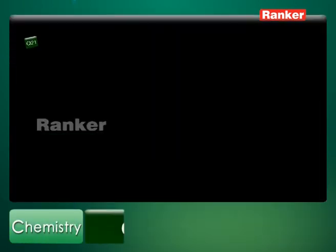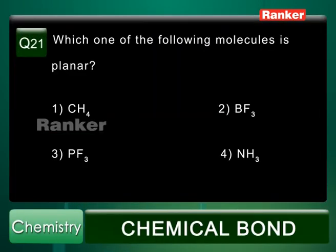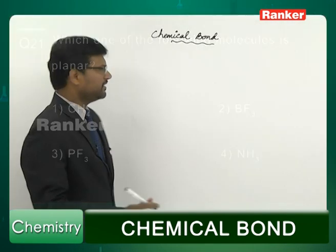Question number 21: Which one of the following molecules is planar? Options are: number 1, methane; number 2, BF3; number 3, PF3; number 4, ammonia. The correct answer is 2, BF3.